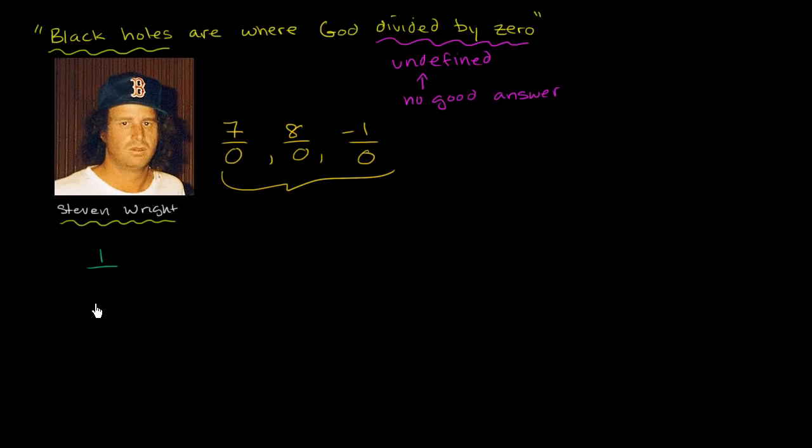And since we don't know what it means, or we're trying to figure out what it means to divide by zero, let's just try out really small positive numbers. Let's divide by really small positive numbers and see what happens as we get close to zero.